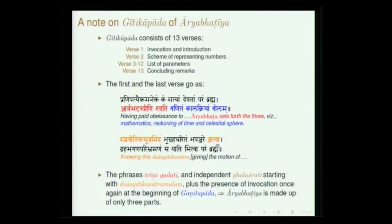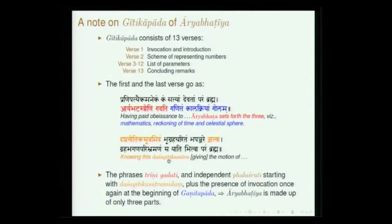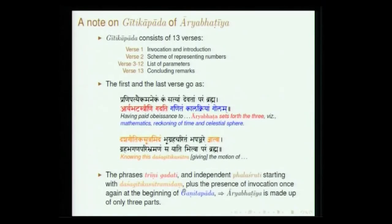The last verse of Githika Pada goes: Dasagitika sutramidam bhugraha charitam bhapanjare nyatva graha bhagana paribhramana sayati bhitwa parambhramha. He says Dasagitika sutramidam — this is called Dasagitika. Leaving out the first and last verse, triini gadati very clearly tells that the basic text of Aryabhatiya — leaving out Githikapada — consists of 108 verses. There is also a Palashruti and an invocation at the beginning of Ganitapada. We have basically three parts of Aryabhatiya: Ganita, Kalakriya and Gola. What we are going to discuss here is only Ganitapada.